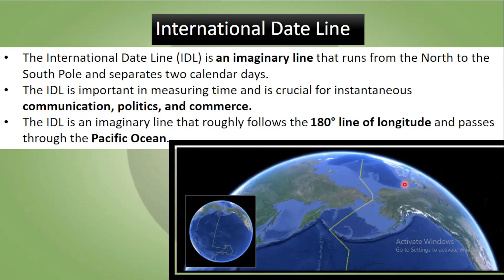Now, what is the International Date Line? The International Date Line is an imaginary line which runs from the North Pole to the South Pole, and it separates the two calendar days. It is important in measuring time and is very crucial for instantaneous communication, politics, and commerce. It roughly follows the 180-degree line of longitude and passes through the Pacific Ocean.